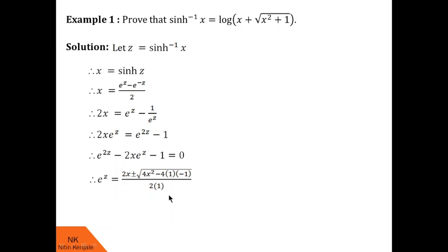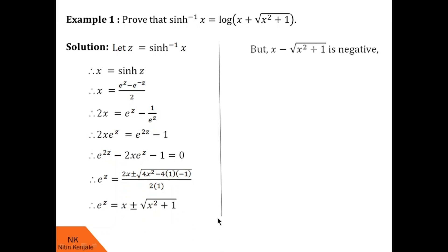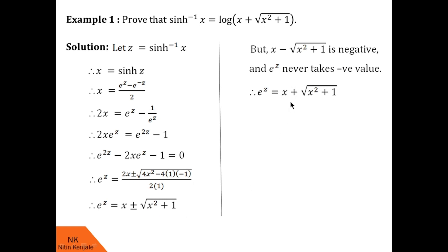The root of this quadratic equation is given by e^z = (−b ± √(b² − 4ac)) / 2a. Further simplification gives e^z = x ± √(x² + 1). Note that √(x² + 1) is always greater than x, so x − √(x² + 1) is a negative value, and e^z never takes a negative value. Therefore, we discard x − √(x² + 1) and conclude that e^z = x + √(x² + 1).